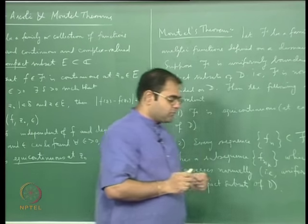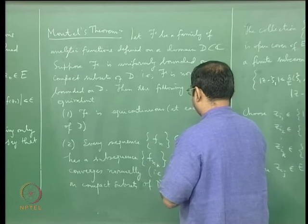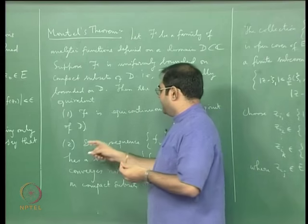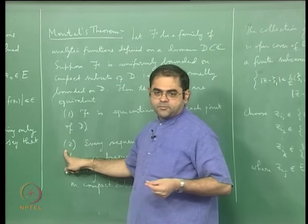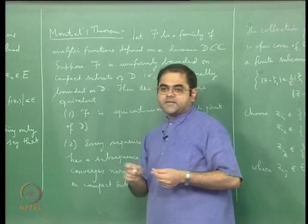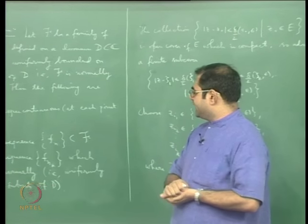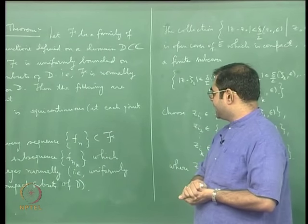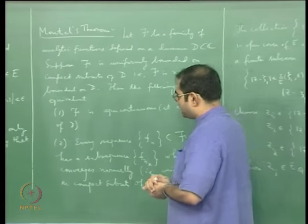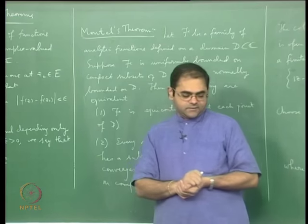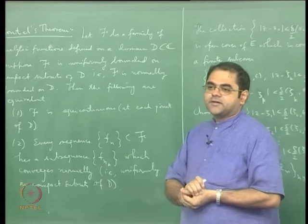This is Montel's theorem. The implication 1 implies 2 is what we are going to prove. The implication 2 implies 1 can be proved in the same way one would do for the Arzelà-Ascoli theorem — it is a proof by contradiction.